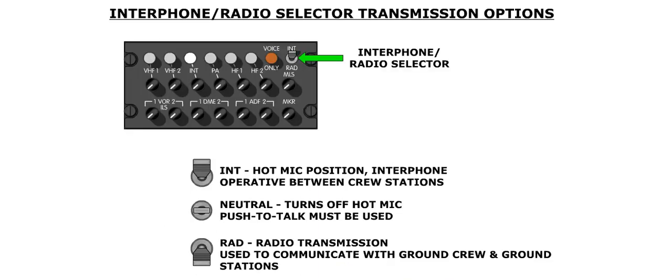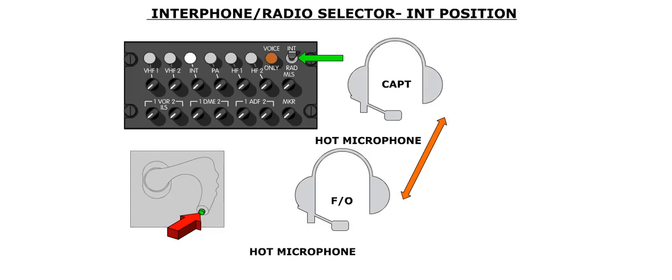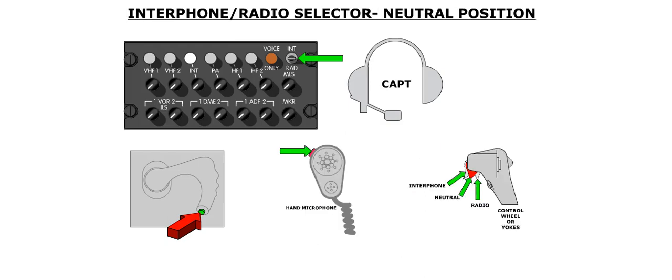The transmission through the oxygen mask or boom microphone is controlled by the INT/RAD switch on the ACP. It has three positions. The forward position is labeled INT for interphone. In this position, the associated crew member's boom or oxygen microphone will be hot, allowing flight deck crew members to communicate through the interphone system without having to press a transmit button. However, transmission through a system selected by a transmission key requires the use of one of the push-to-talk buttons. The middle neutral position turns off the hot microphone. When this position is selected, a push-to-talk button will have to be used for each transmission, including interphone communication between crew members.